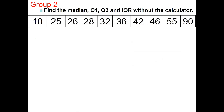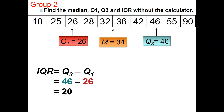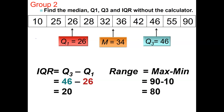This is a different problem. The median is the number in the middle. In this case there are 10 numbers, so the middle is in between 32 and 36. The median is 34, the average of 32 and 36. The middle of the first half is 26, and the middle of the upper half is 46. The interquartile range is 46 minus 26, which is 20, and the range is 90 minus 10, which is 80.